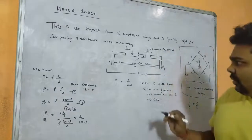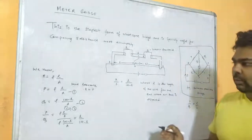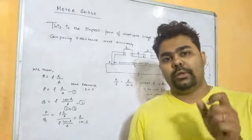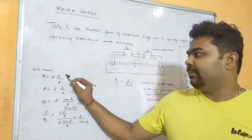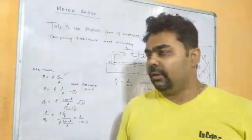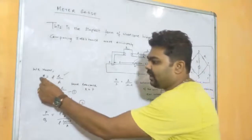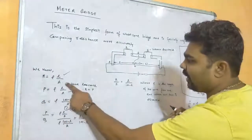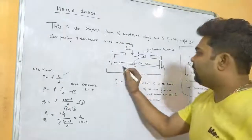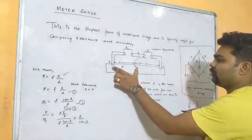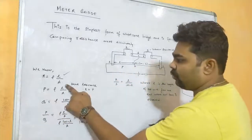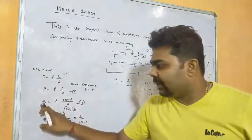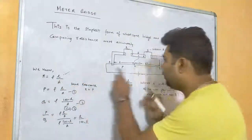We know P/Q = R/S. Resistance of a wire depends upon resistivity, length, and area of cross-section. Combining P with resistance R: P equals rho*l/A, where the resistance from A to D is taken as P. So P = rho*l/A. Similarly, Q corresponds to DC, so Q = rho*(100-l)/A.